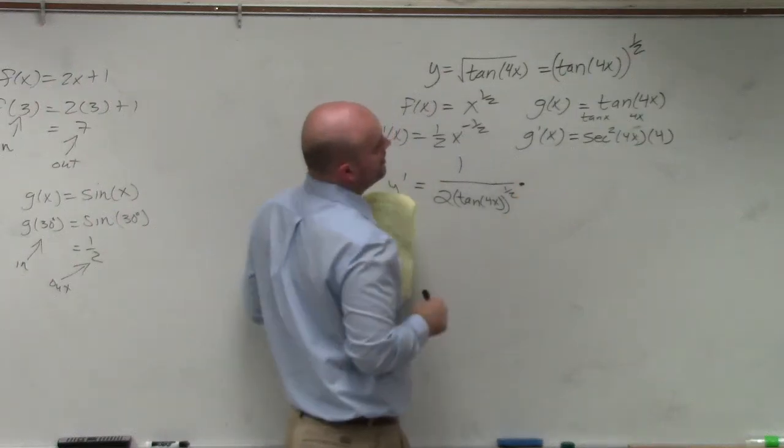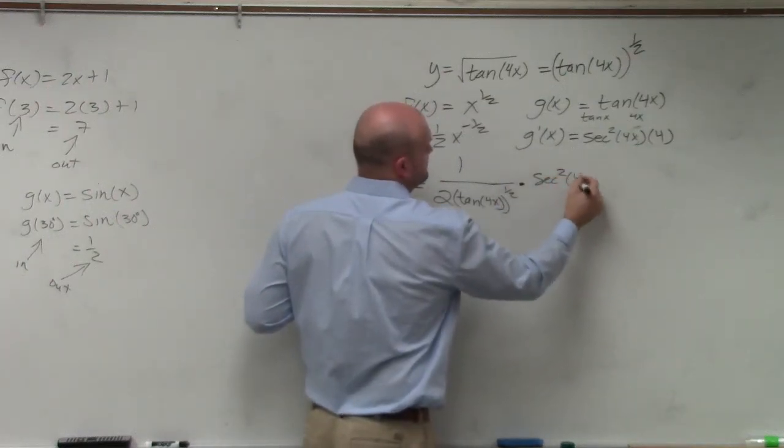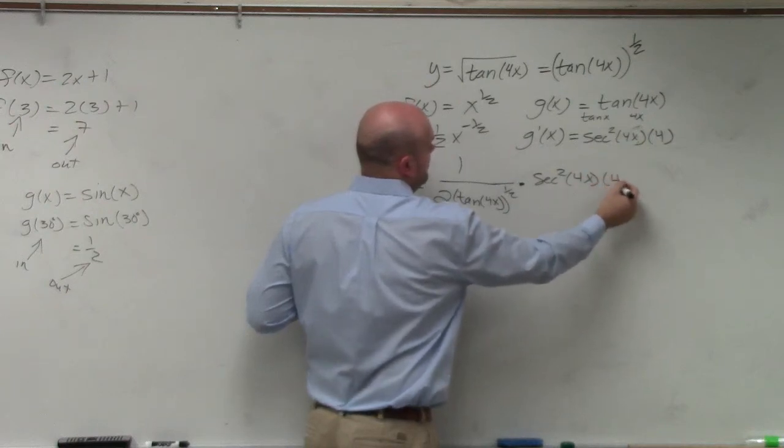times my g prime of x, which is secant squared of 4x, times 4.